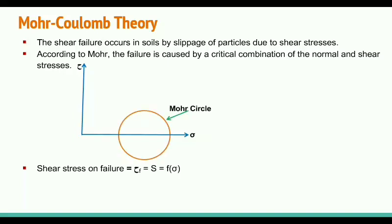The critical combination is given by the straight line that is tangent to the Mohr circle — this is called the failure envelope. Every point on the failure envelope keeps the critical combination of shear stress and normal stress. If you change the shear stress, you get a different normal stress, and vice versa. The failure envelope touches the circle at point D, which gives the critical combination. A line from D to the horizontal sigma axis at point B represents the failure plane. The vertical intercept on the shear stress axis is cohesion C, and the angle with the horizontal is φ, the angle of internal friction.